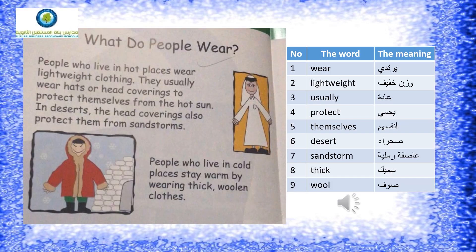What do people wear? People who live in hot places wear lightweight clothing. They usually wear hats or head coverings to protect themselves from the hot sun. In the desert, the head covering also protects them from sandstorms. People who live in cold places stay warm by wearing thick wool clothes.